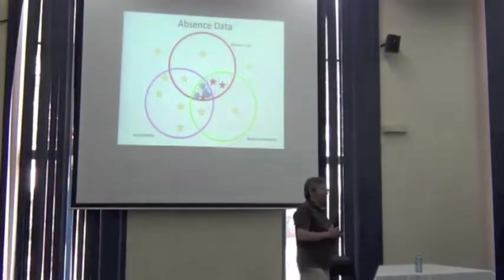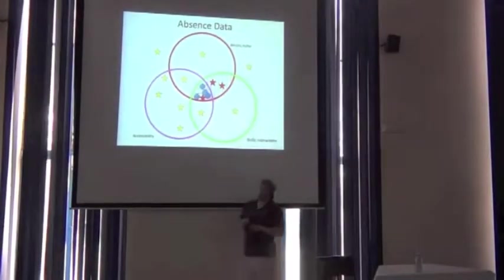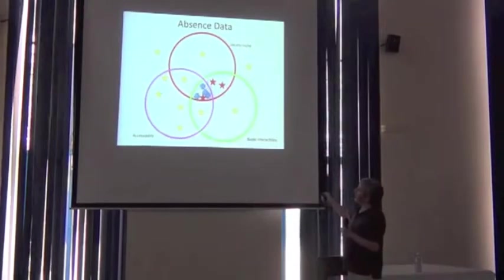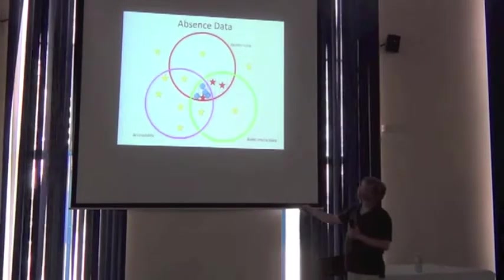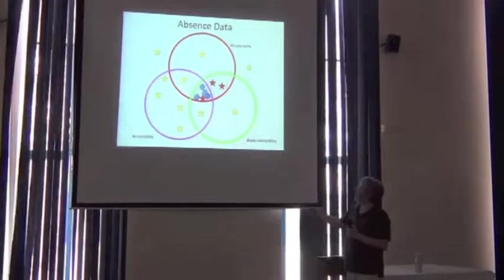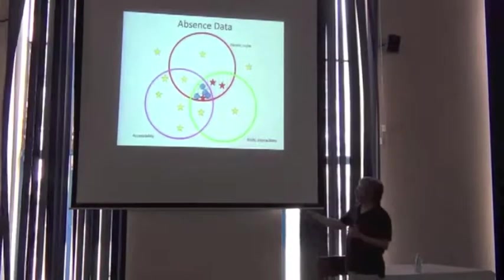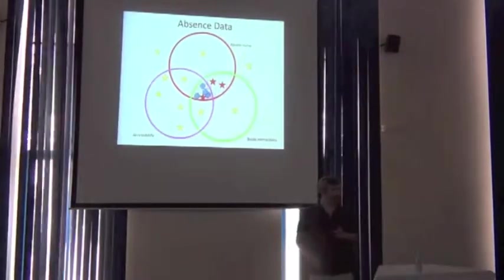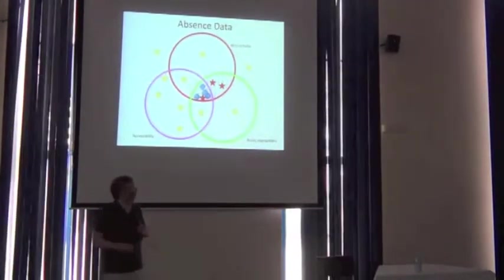Here we go back to the BAM diagram. I want to remind you about some of these details. Absences come from all over. The really relevant absences are these. These are absences for different sets of reasons. And even in the area that is both appropriate abiotically, appropriate biotically, and accessible, even there, we can have absences.